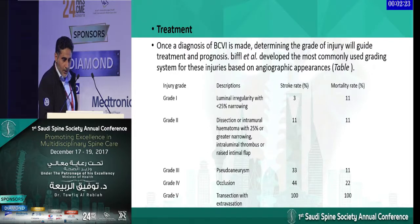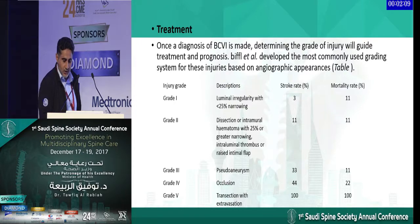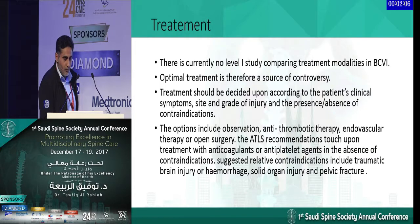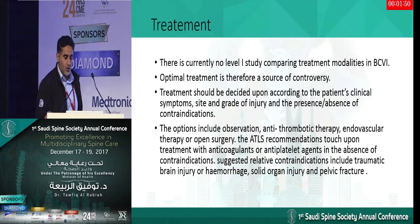For treatment, injuries are sub-classified by grade: Grade 1 is luminal irregularity, Grade 2 is dissection, Grade 3 is pseudoaneurysm, Grade 4 is occlusion, and Grade 5 — the worst — is transection, which carries almost 100% mortality. There is no level 1 study comparing treatment modalities for blunt cerebrovascular injuries. Optimal treatment is therefore a source of controversy, and most treatment is decided based on multidisciplinary guidance.